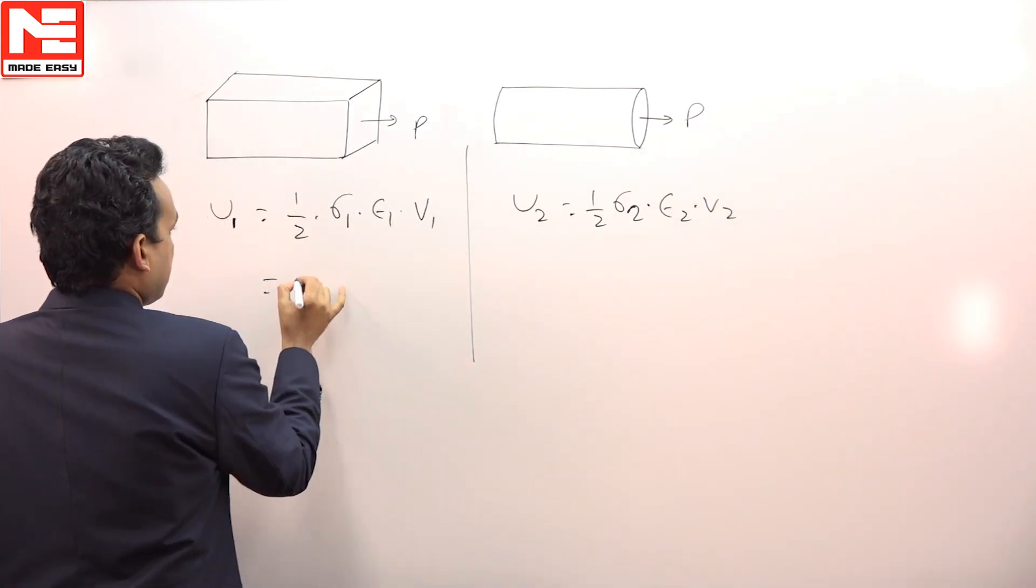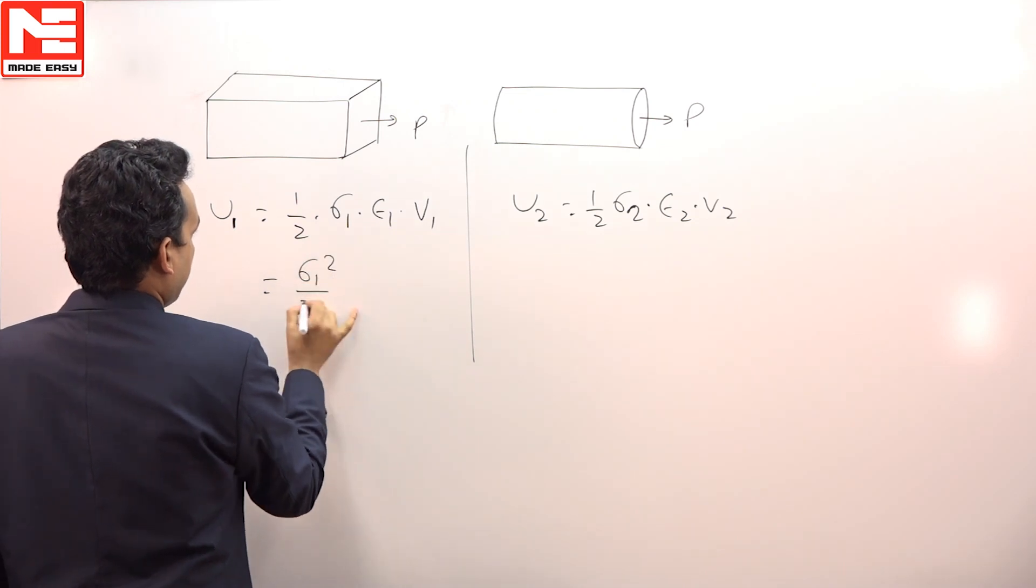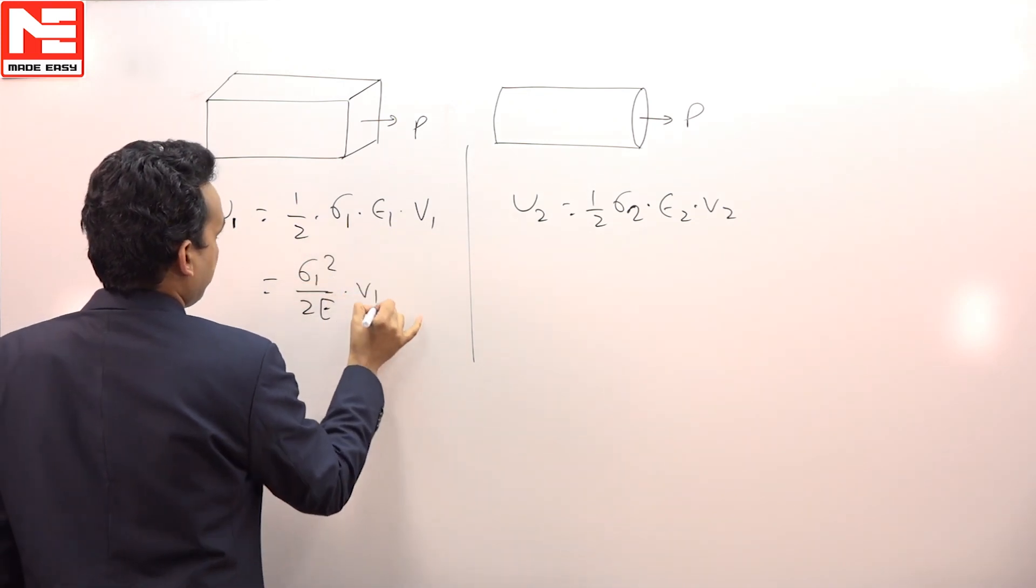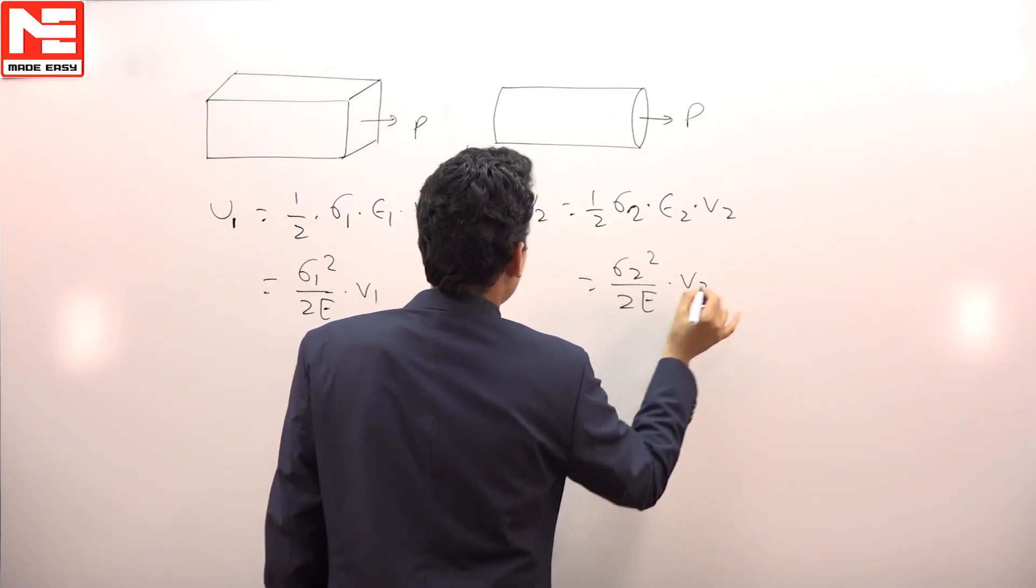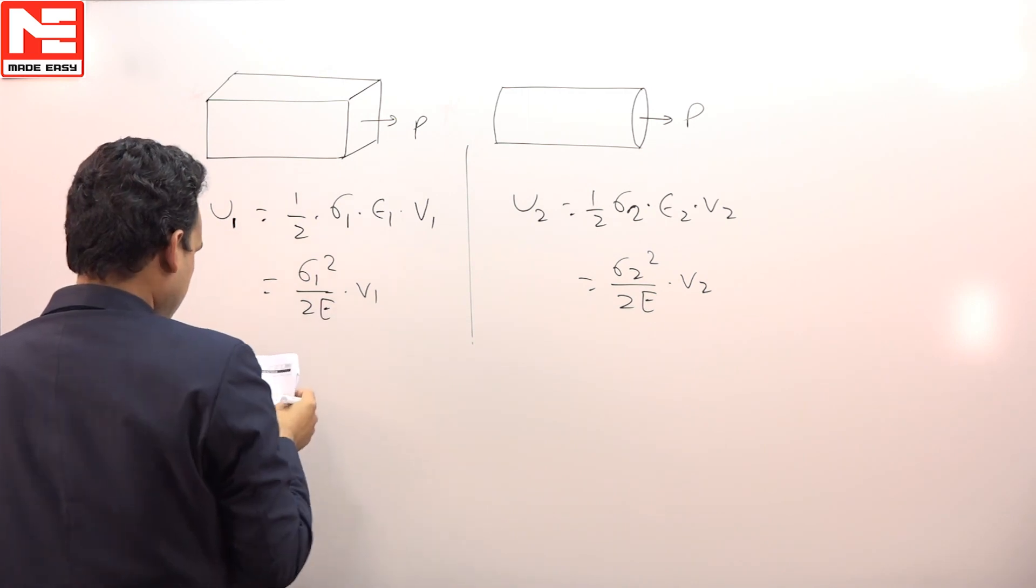This can be written as σ₁²/(2E) × V₁, or this is σ₂²/(2E) × V₂. Now both of these strain energies are the same.